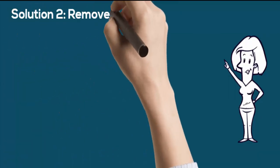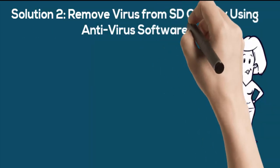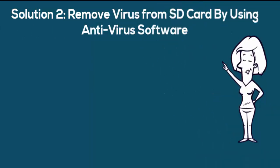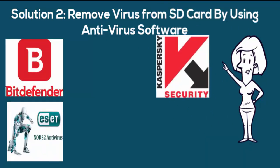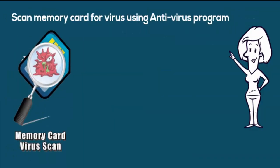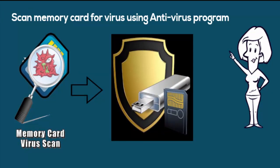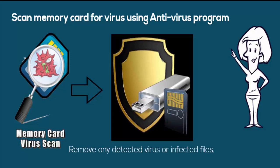Solution 2: Remove virus from SD card by using antivirus software. You can use any reliable antivirus software such as Bitdefender, Avast, Kaspersky, Norton, Avira, and so on. Scan the memory card for viruses thoroughly using your antivirus or anti-malware program and remove any detected viruses or infected files. Congratulations! You can now access the folders and files stored within the card.